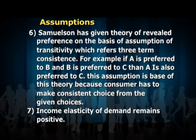Assumption six: Samuelson's revealed preference theory is based on the assumption of transitivity, which refers to three-term consistency. For example, if A is preferred to B and B is preferred to C, then A is also preferred to C. This assumption is the base of the theory because the consumer must make consistent choices. Assumption seven: income elasticity of demand remains positive.